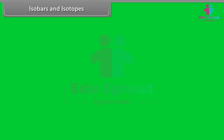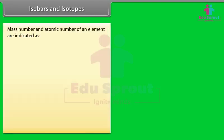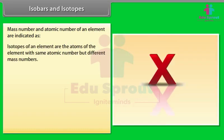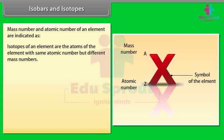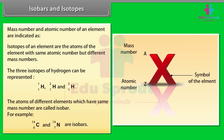Isobars and isotopes: Isotopes of an element are atoms of the element with the same atomic number but different mass numbers — for example, the three isotopes of hydrogen. Atoms of different elements which have the same mass number are called isobars.